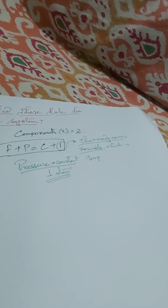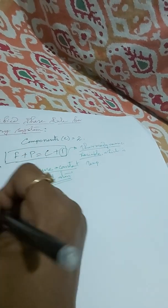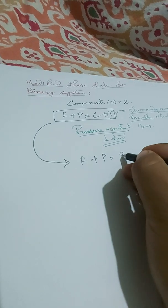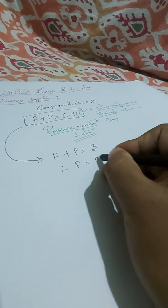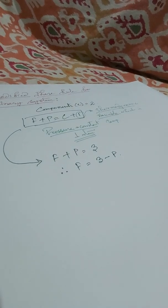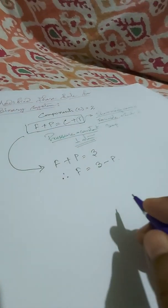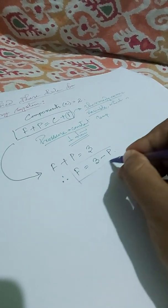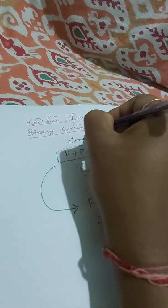In this case C is equal to 2, so the equation becomes F plus P is equal to 3, or we can write it as F is equal to 3 minus P. This is the phase rule — the degree of freedom — when we are taking a binary system where C is equal to 2.